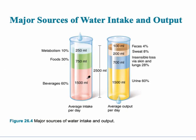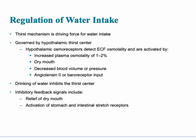This chart shows water intake on the left and output on the right — be aware of the various amounts and percentages. The regulation of output is controlled by the thirst center, specifically the hypothalamus. The osmoreceptors are activated when osmolality increases, there's a dry mouth, blood pressure goes down, or there's input from angiotensin II or the baroreceptors. So there are several mechanisms that can activate the thirst center found in the hypothalamus.